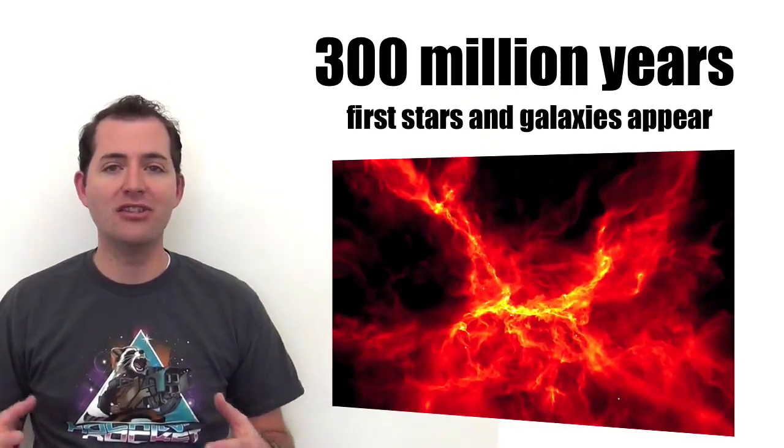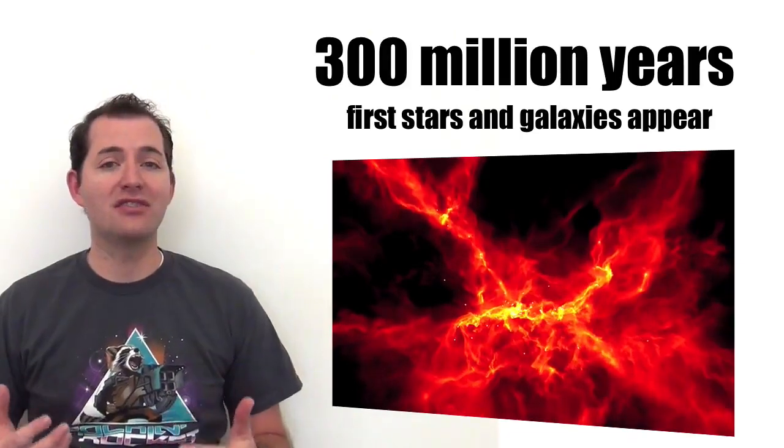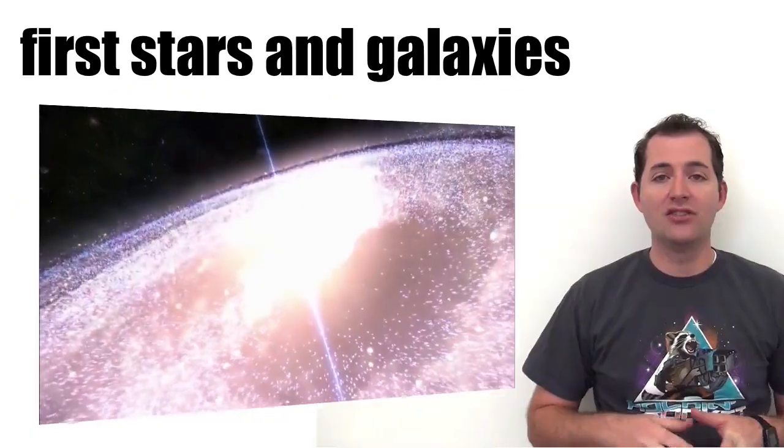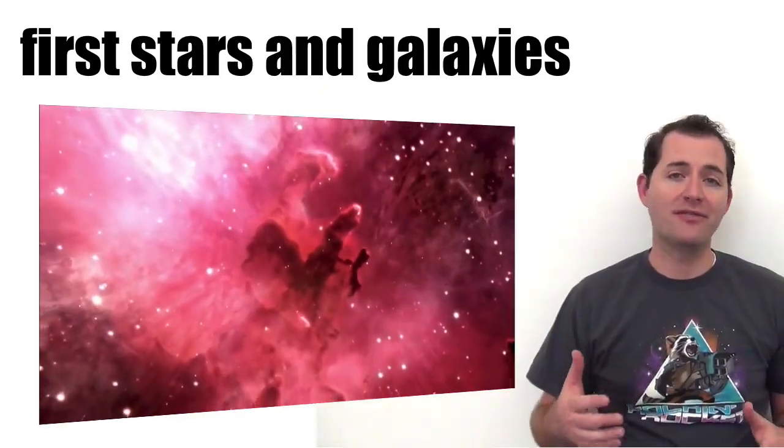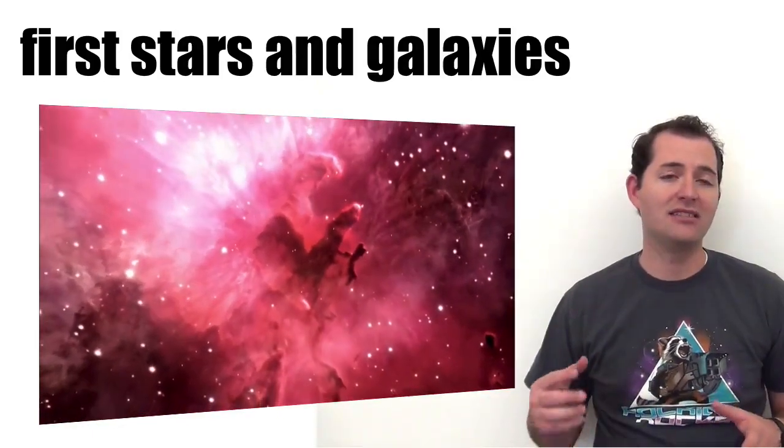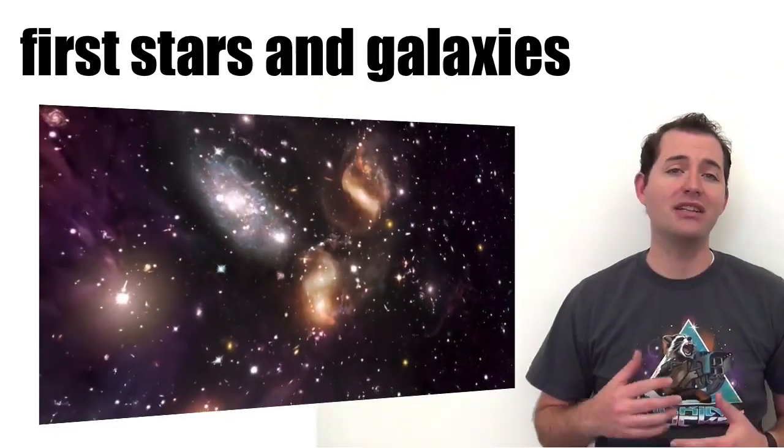As the force of gravity continued to pull more and more of these clumps together, there was eventually a formation of stars and galaxies. So this point of 300 million years after the Big Bang marks the first time that there were stars and galaxies in our universe. This was still about 12 to 15 billion years ago.